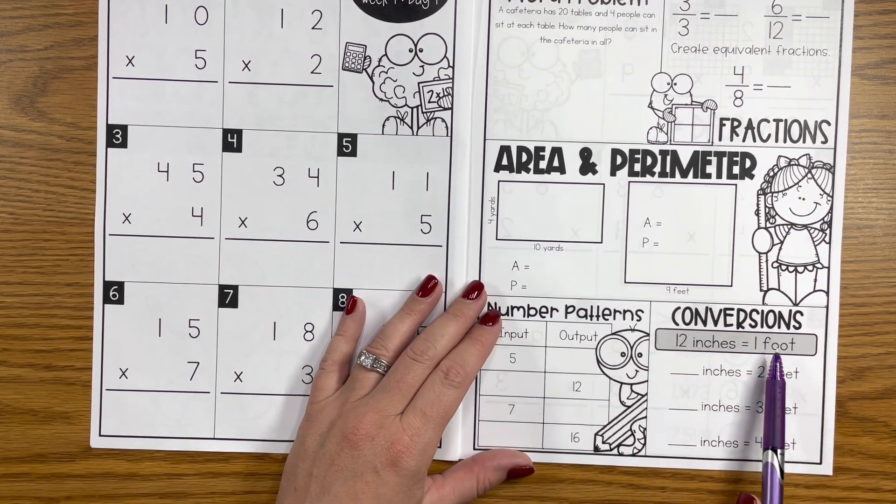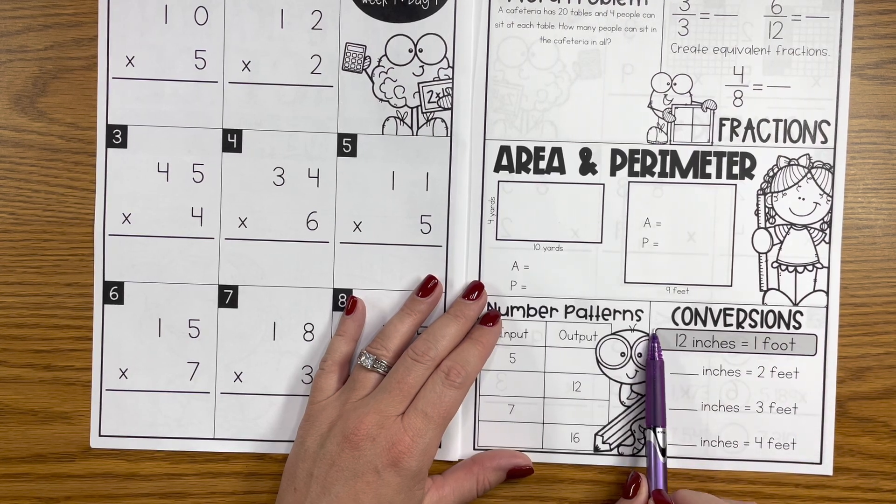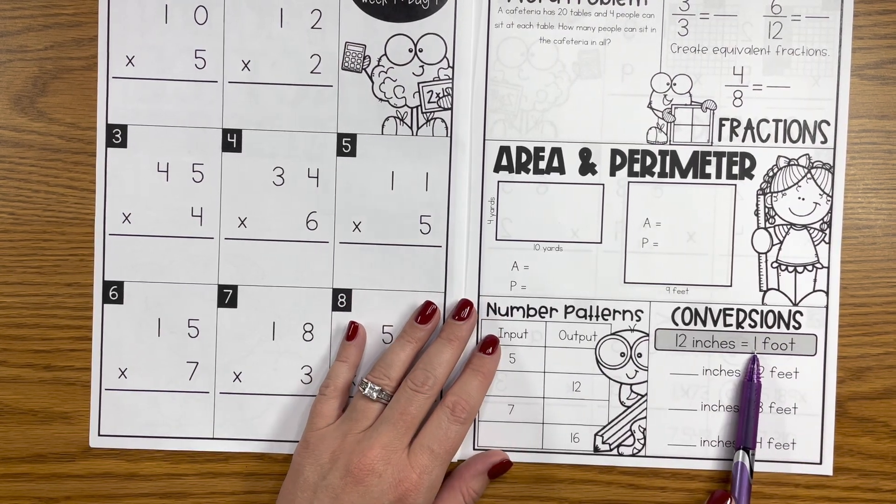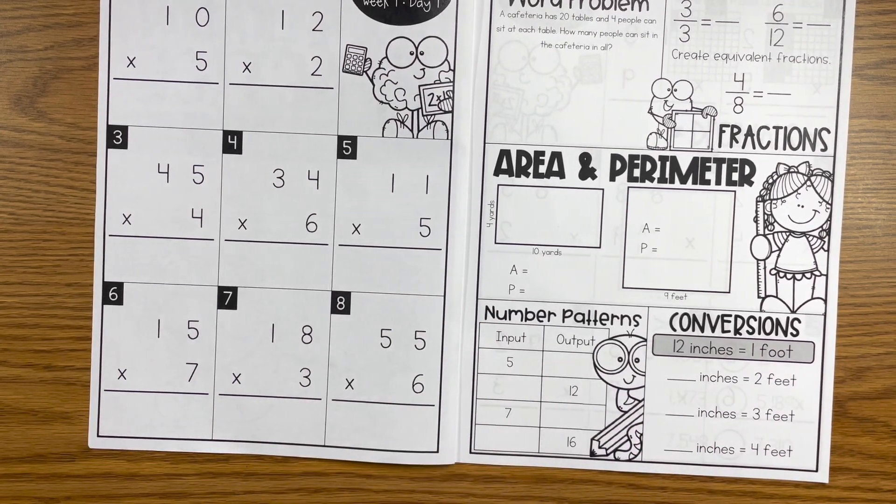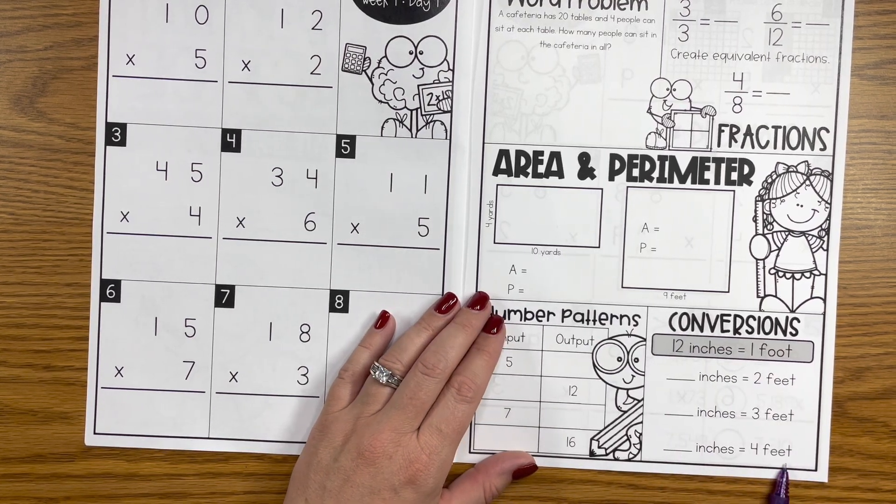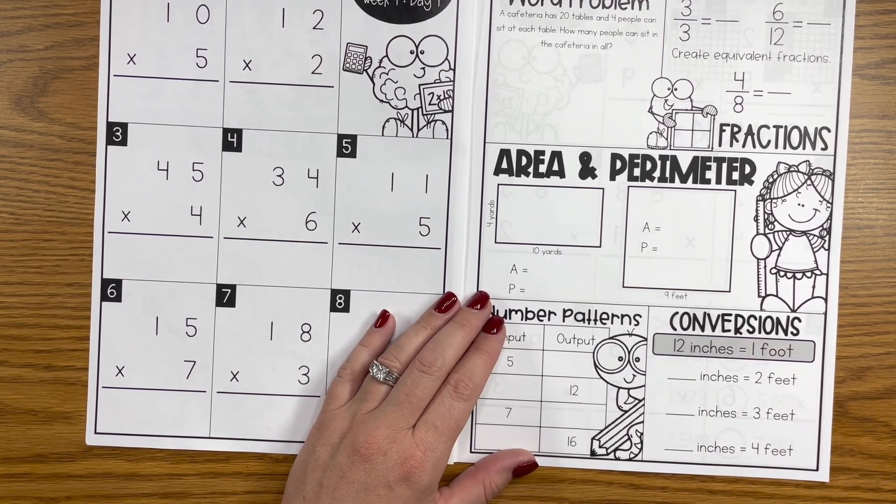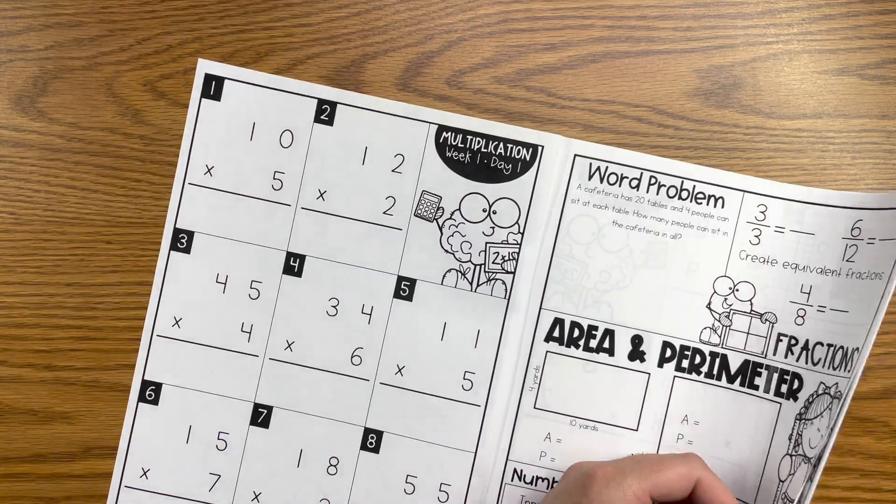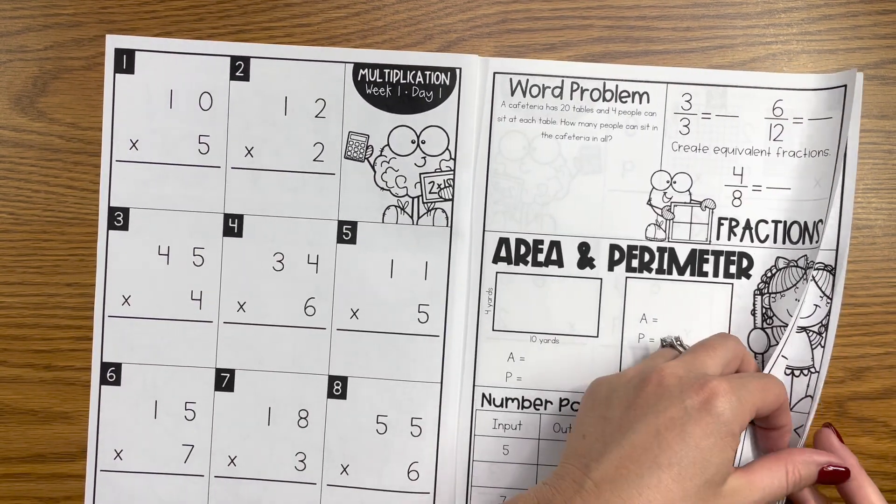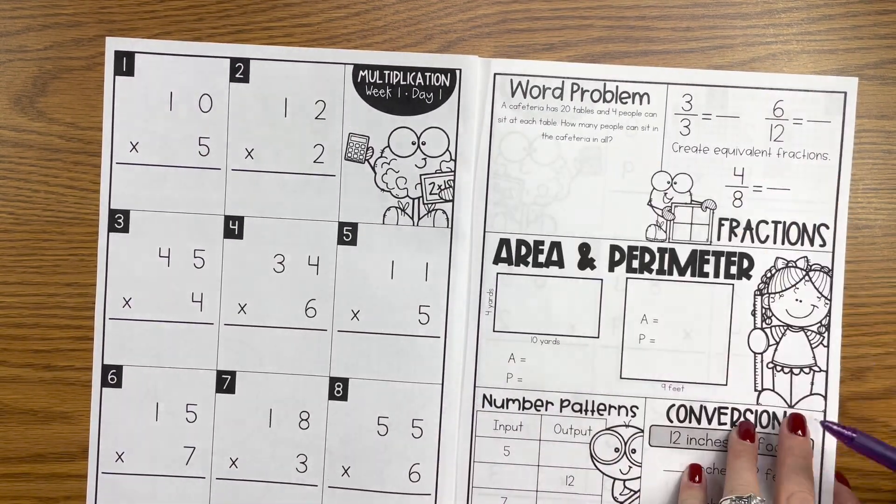Then we'll work on conversion. So it always has a key saying okay, 12 inches equals one foot or three feet equals one yard, and then use that information to complete simple conversions. Now that will be the same on all of the odd days. So this was day one.